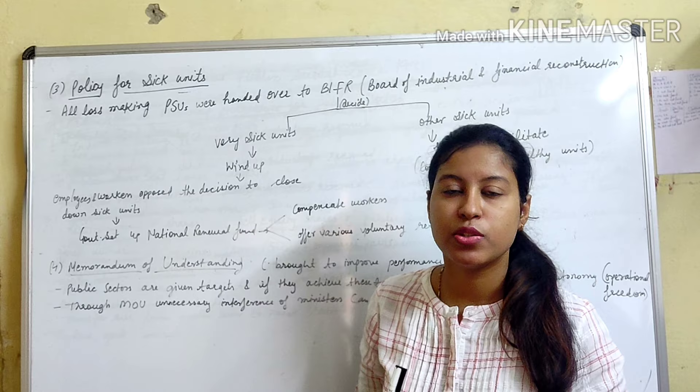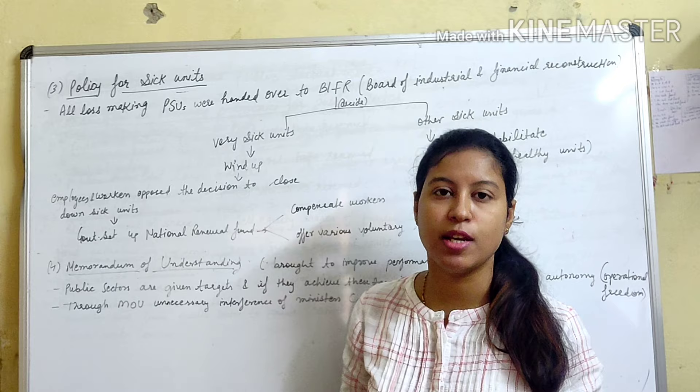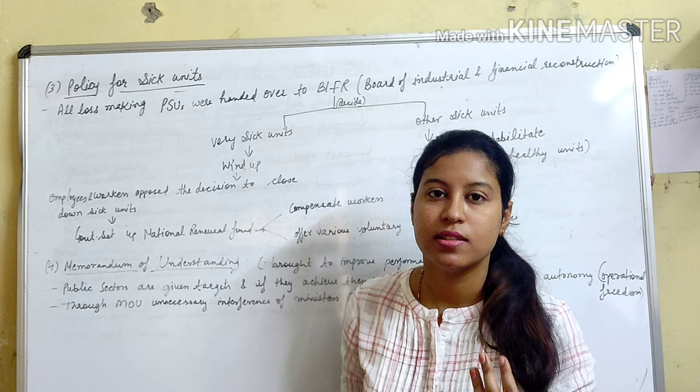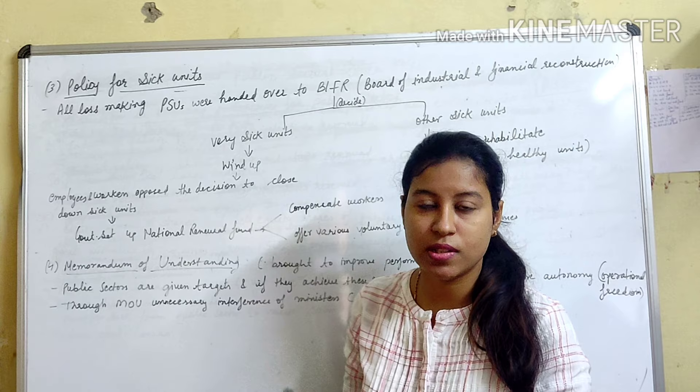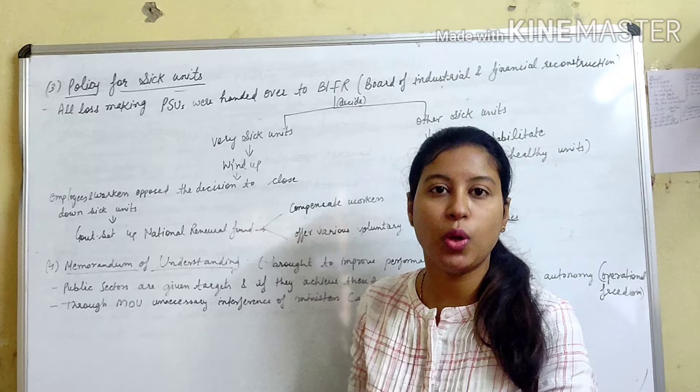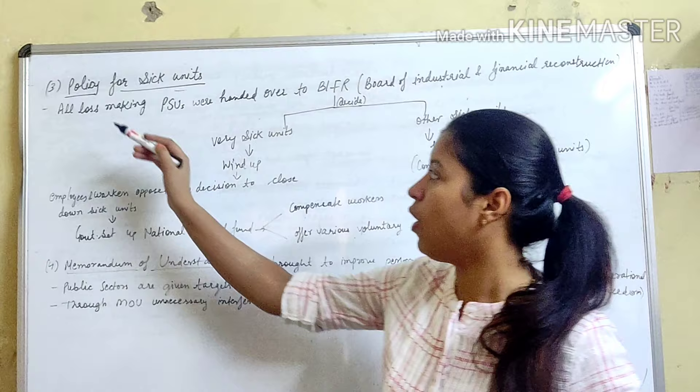The third policy is the policy for sick units. Sick units means industries that are running at a loss. All loss-making public sector units were handed over to BIFR — the Board for Industrial and Financial Reconstruction — which would decide their fate.